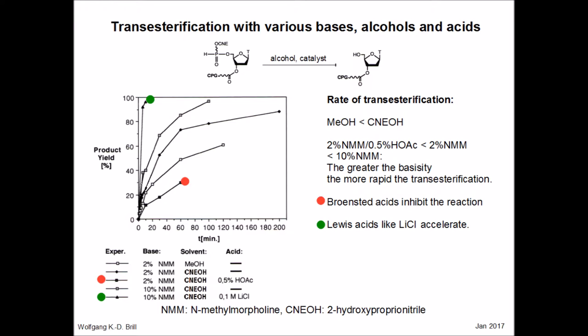Here we summarize the various factors that impact the transesterification rates. Methanol, among the alcohols used, provides lower rates than the more acidic cyanoethanol. Among bases, the stronger the base, the more rapid the transesterification process. In turn, Brønsted acids inhibit the reaction. Lewis acids, however, accelerate it.